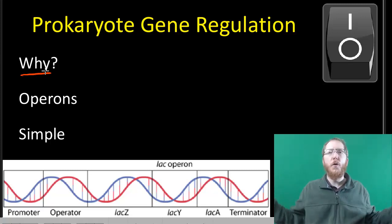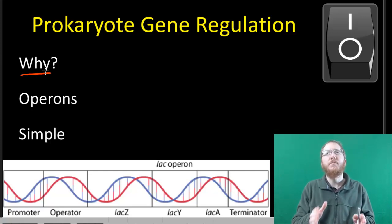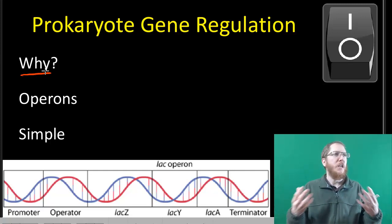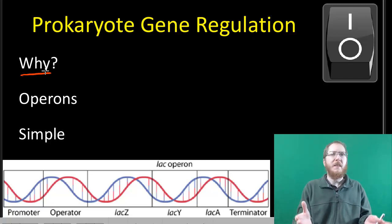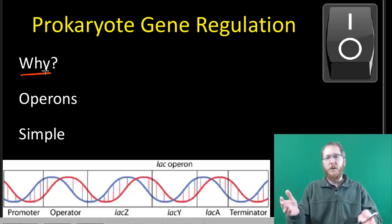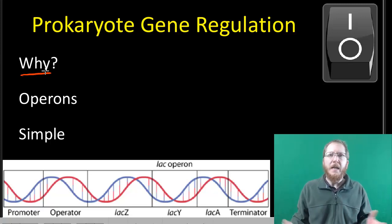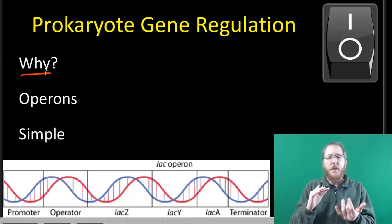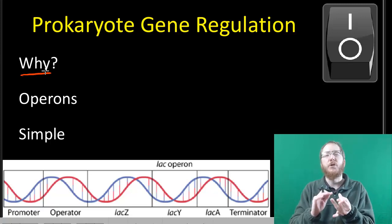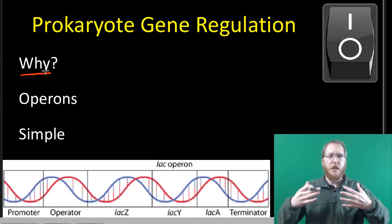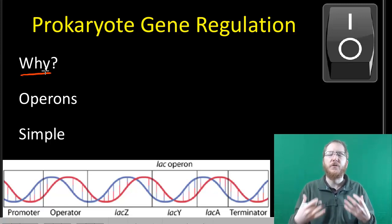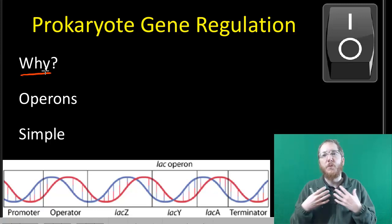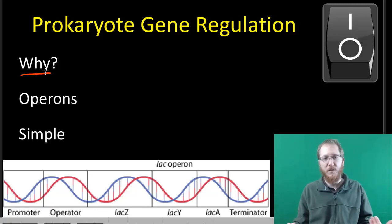Having all genes on at the same time would create a bunch of proteins that are not needed to live. It's like turning on every light in your house and every electronic device when you're only sitting in one room reading a book — it's wasteful. As a cell, using all that energy for something unnecessary means you can't put it towards survival or reproduction, so your genes won't spread much.